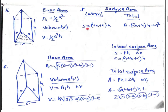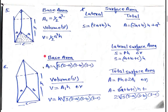The lateral surface area is S = (2a + b) × h. The total surface area is A = (2a + b) × h + a². Using all these formulas, we will find the requirements of our question related to the prism.